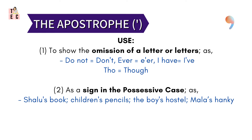Now, the apostrophe. Apostrophe is used to show the omission of a letter or letters. For example, we can write 'do not' as 'don't,' which has an apostrophe, while the meaning is conserved. Likewise, 'I have' can be written as 'I've,' and 'though' as 'tho'.' Then, an apostrophe is used as a sign in the possessive case — like Shalu's book, Poise's hostel, Mala's hanky, etc.